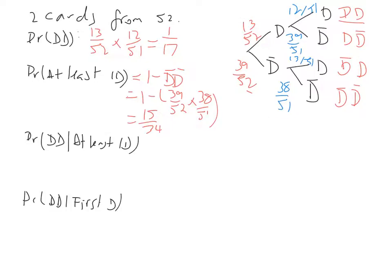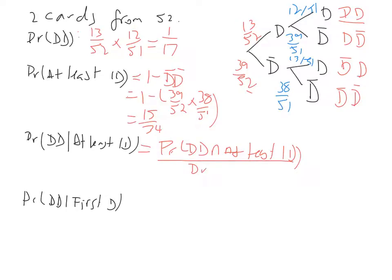Here's where it gets interesting. We've got the probability of two diamonds intersecting with at least one diamond, over the probability of at least one diamond. What's the probability of two diamonds and at least one diamond? If we've got two diamonds, we have to have at least one. So this intersection is just the probability of two diamonds — that's 1 over 17. And then we divide that by what we found for at least one diamond, which is 15 over 34.